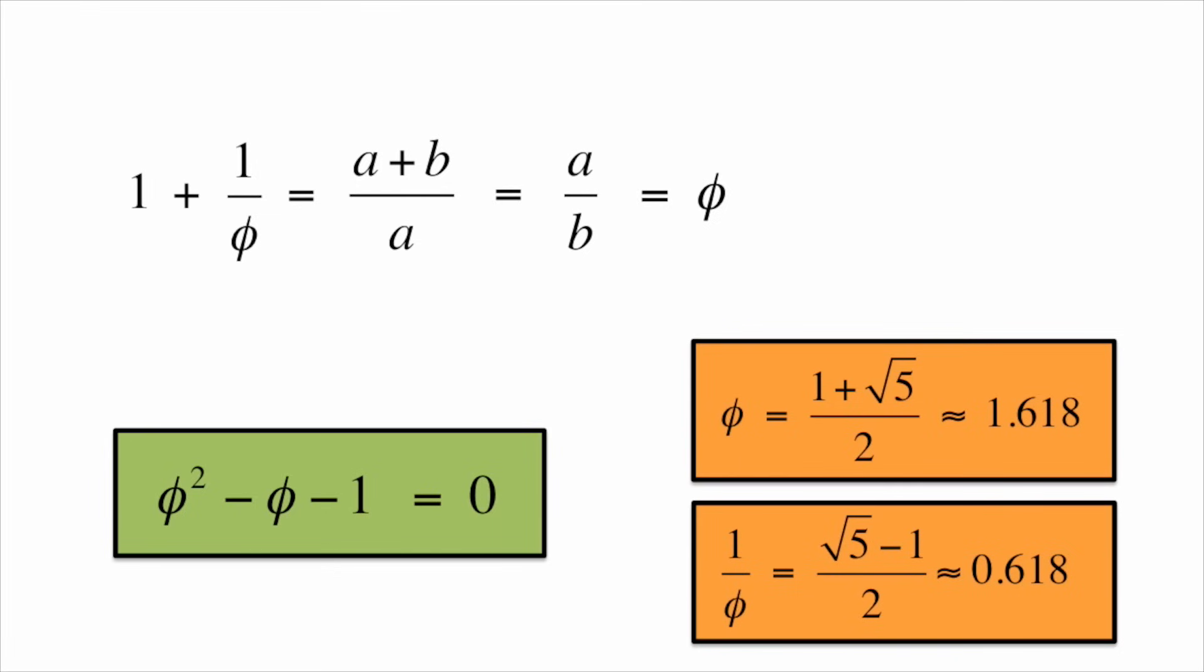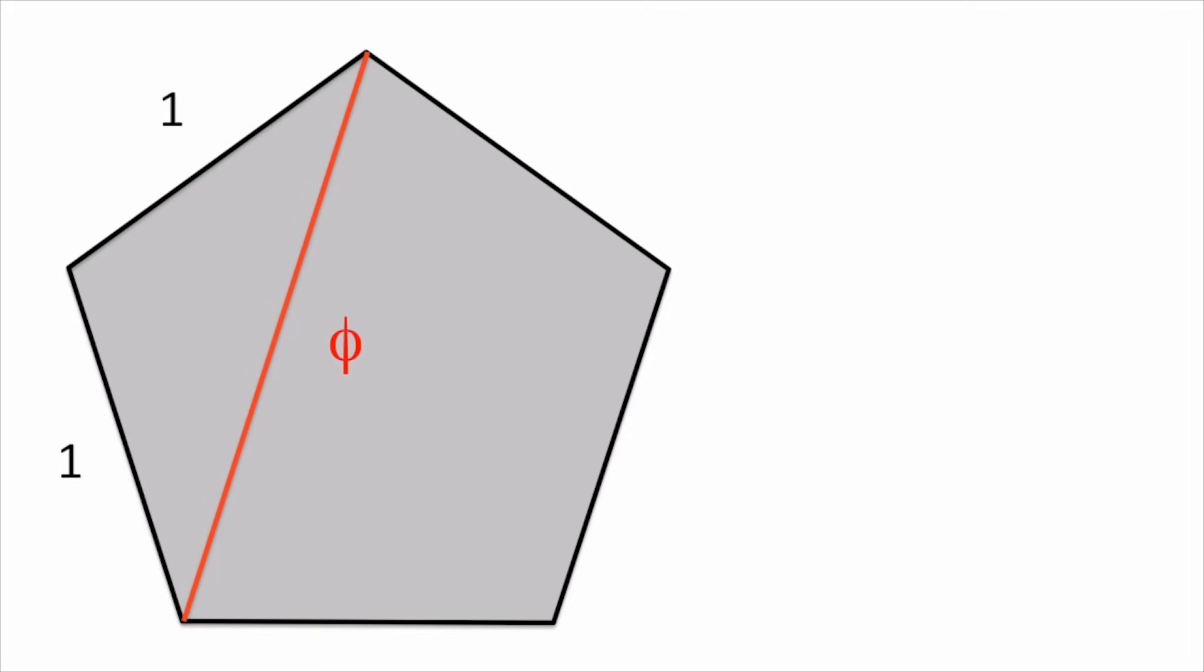The appearance of the square root of 5 should not be surprising because of Phi's relation to the pentagon. In fact, this connection explains why Phi can be written in terms of trig functions.